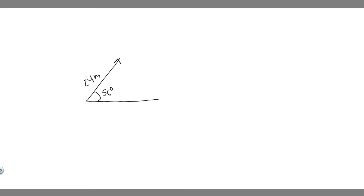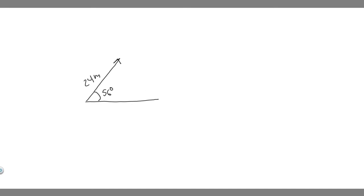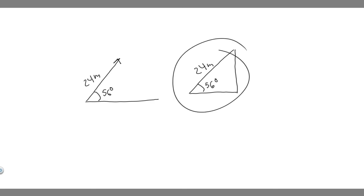The next thing you want to do is rewrite it as a triangle. Just take this and redraw it as a right triangle. So this is going to be 56 degrees, and then you label the hypotenuse of the triangle the magnitude — so the magnitude is 24 meters. And so the next thing we want to do is find the x and y components.